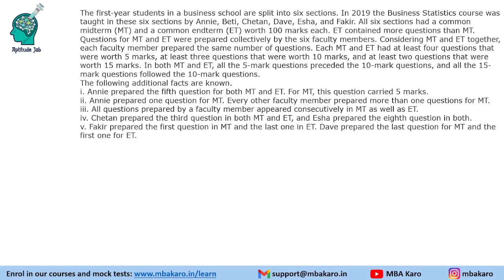Hello everyone, welcome to Aptitude Jam. This set from CAT 2019 Slot 2 DILR says that the first year students of a business school have been split into 6 sections. In 2019, business statistics was taught by 6 different teachers.